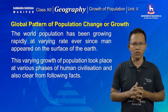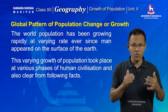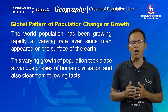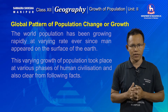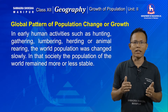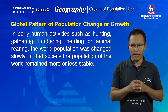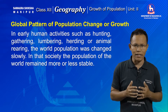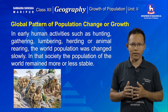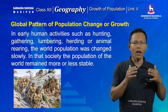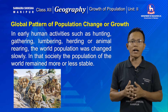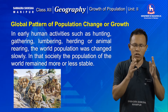This varying growth of population all over the world is also observed at different phases of human civilization. For example, in early human civilization when man was engaged in such primary activities as hunting, gathering, lumbering, fishing and herding, the world population was growing at slow rates.